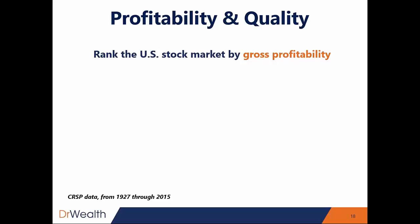Profitability is talking about more profit metrics like your earnings, like your gross profits — all these are related to profitability. Whereas quality can expand to return on equity, return on assets, all these kinds of things which may not be profit related. Quality should encompass profitability in that sense.